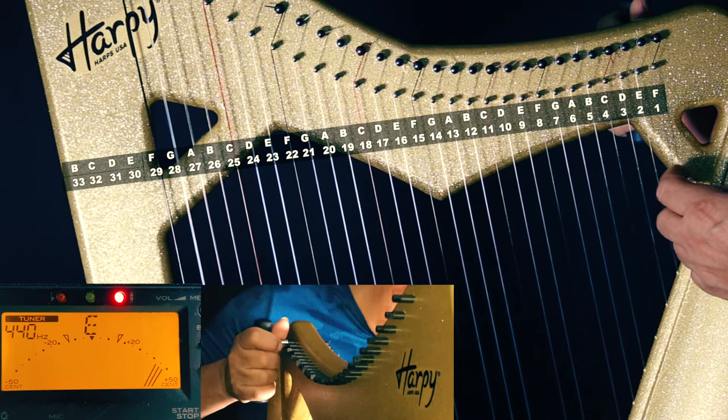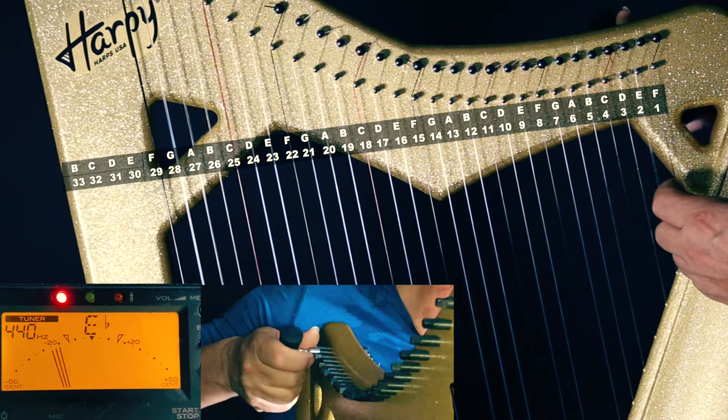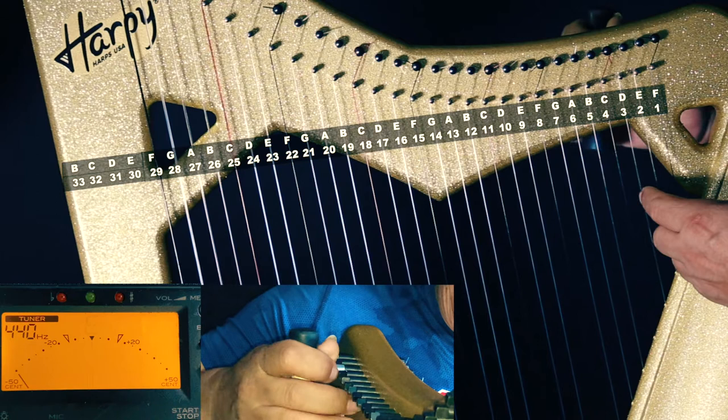C, D, E, F, G, A, B. And then we start again. C, D, E, F, G, A, B. And so on and so forth.